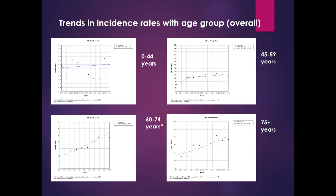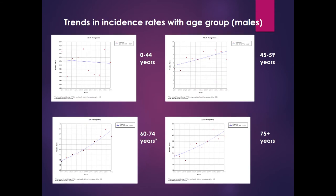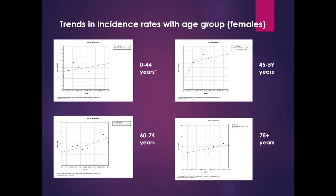Among age groups in the overall population, significant trends were observed in the 60 to 74 and 75-plus age groups. In males, significant trends were observed in the 45–59, 60–74, and 75-plus age groups. A similar pattern was observed in females, with a significant rate higher than in males.